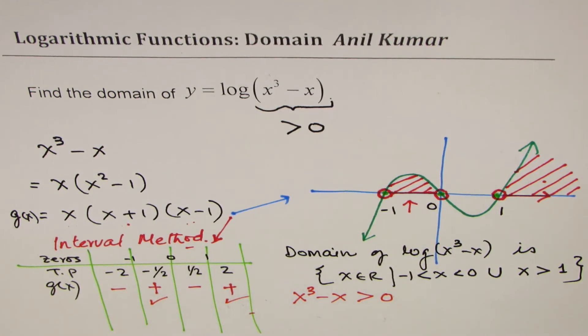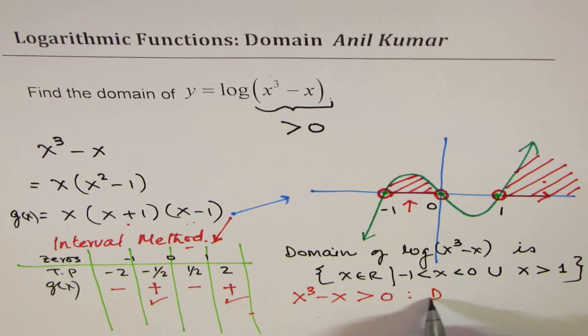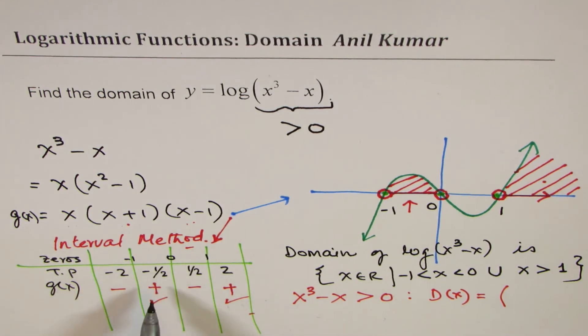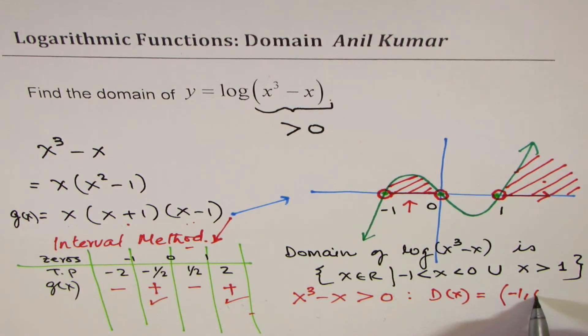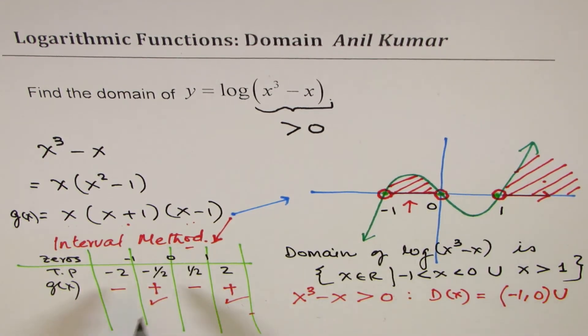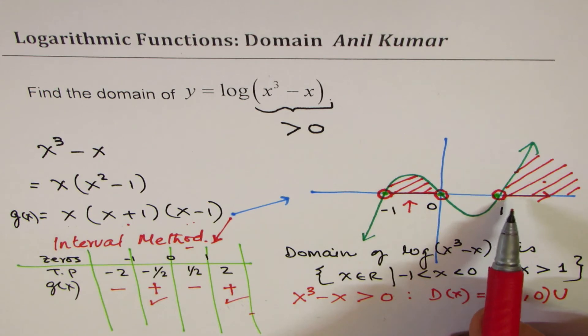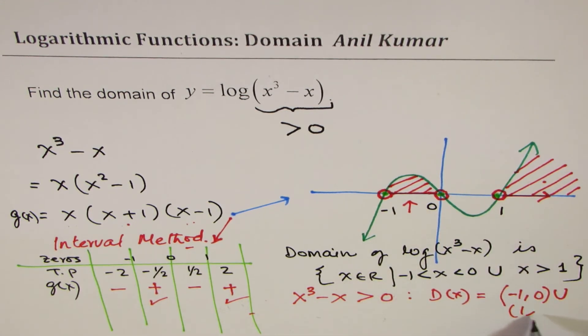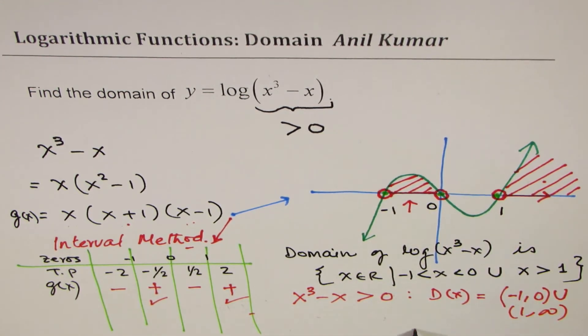Therefore, these 2 intervals are our solution. And we can write that the domain of this function is equal to, this is another way of writing, (-1, 0) union (1, ∞). So, that's an alternate way of writing the domain.